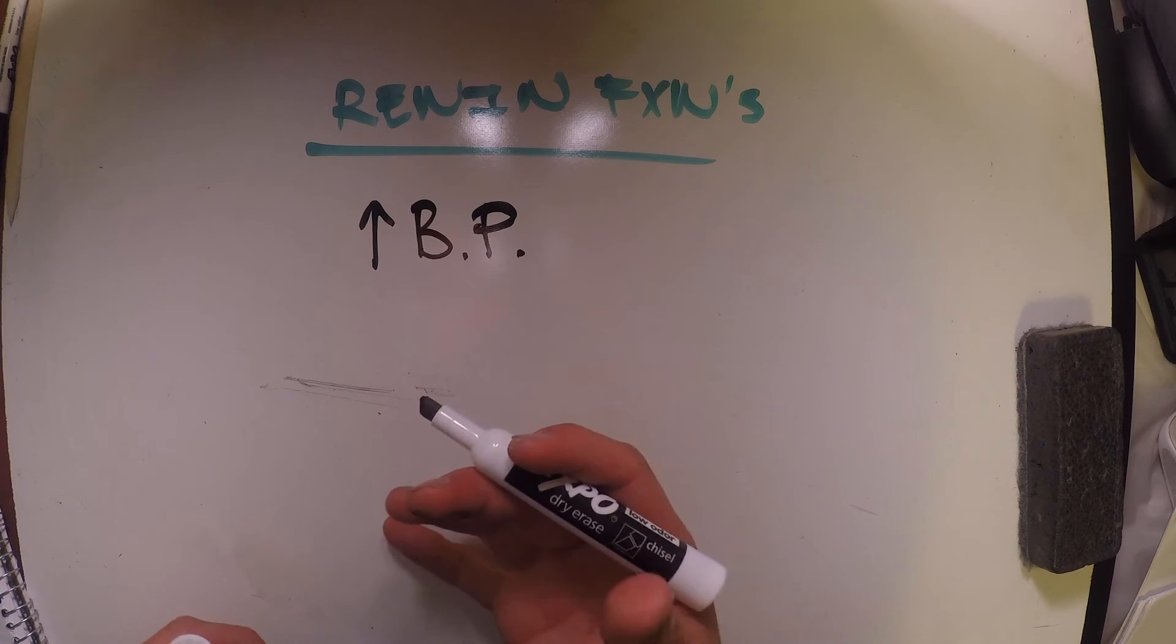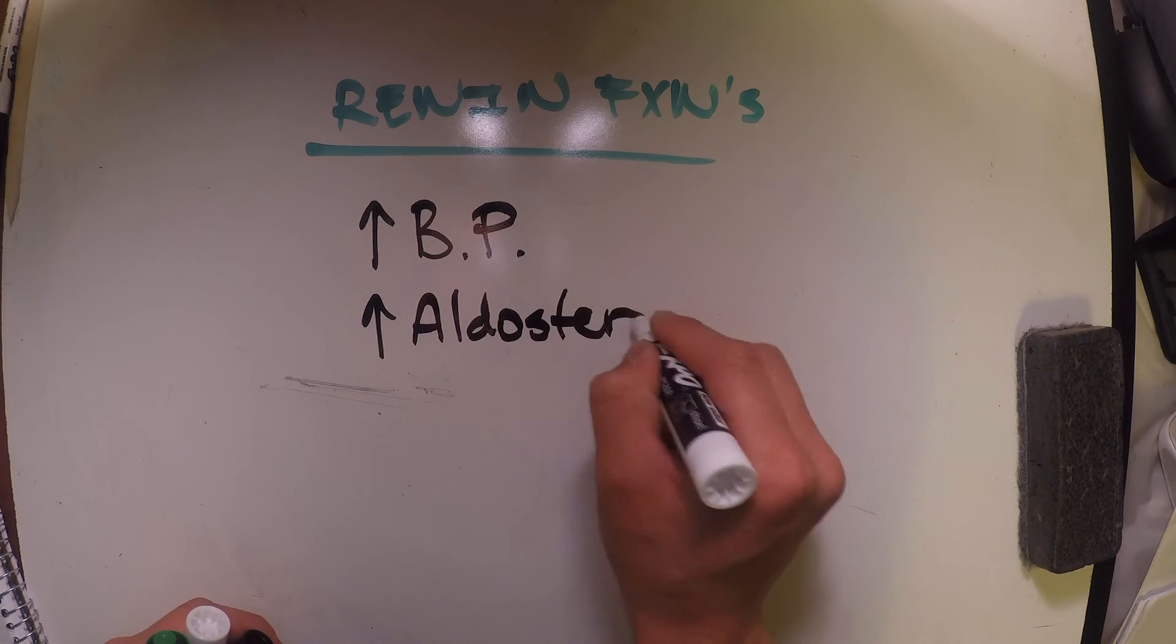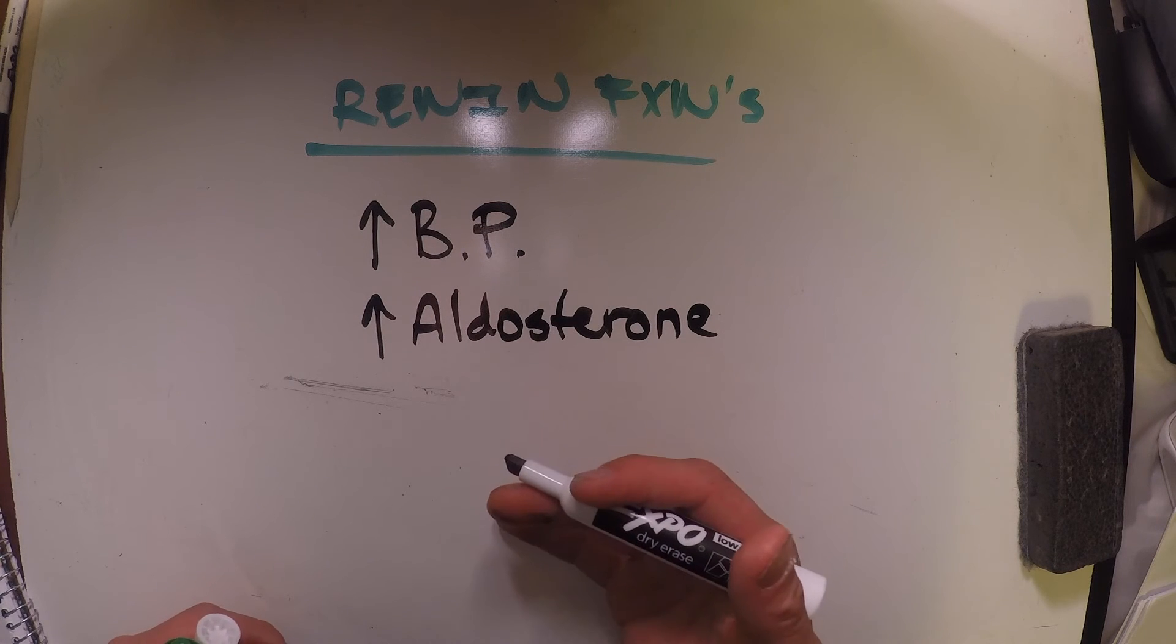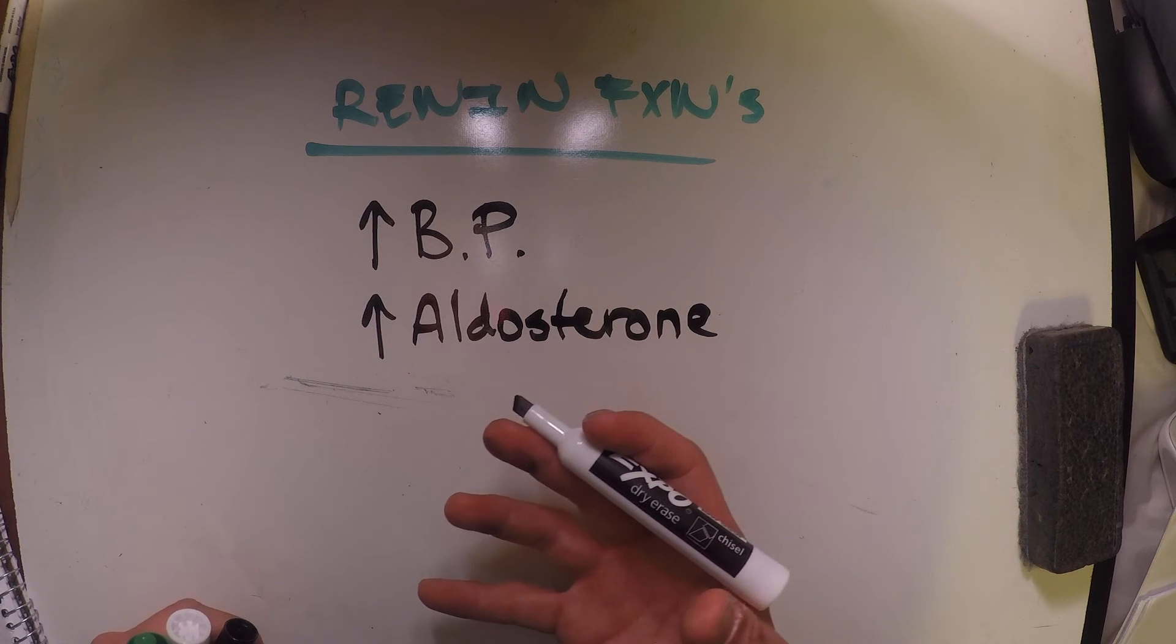Another function of renin is it's going to stimulate the release of aldosterone. I won't talk about aldosterone in this video, but it is extremely important in regulating the absorption of water from our distal convoluted tubule.